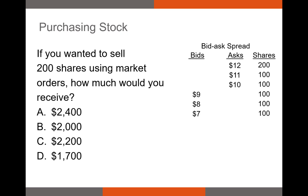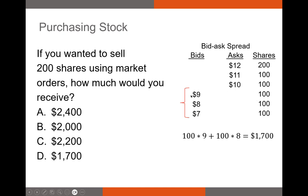Let's take a quick example: if you wanted to sell 200 shares using market orders, how much would you receive? If you're selling using market orders, you focus on the bids — not the asks. You're going to sell your first 100 shares at the highest bid price, which is $9 per share. Then you still have 100 shares to sell, so you sell those for $8 a share. Your grand total — the amount you'll receive for those 200 shares — is $1,700.